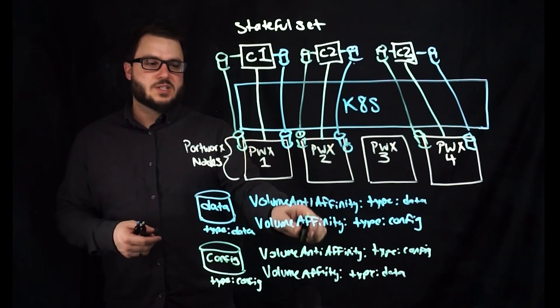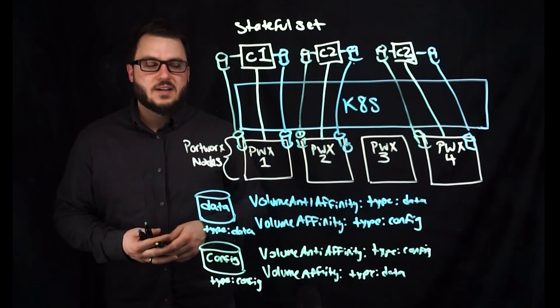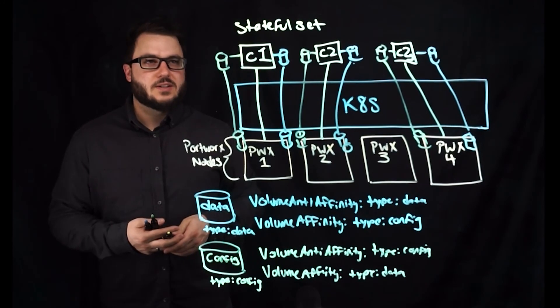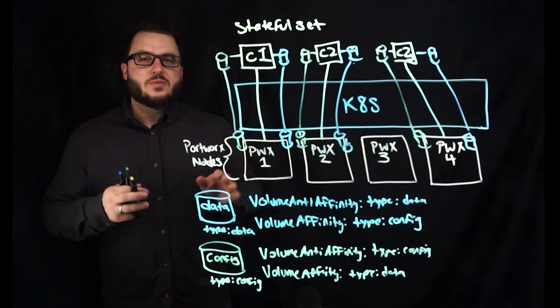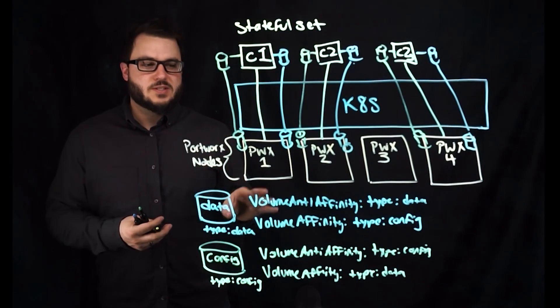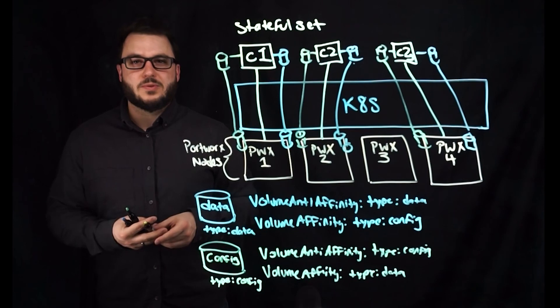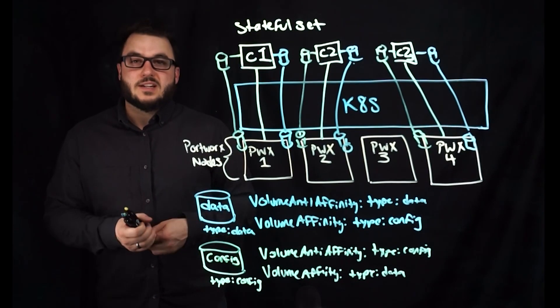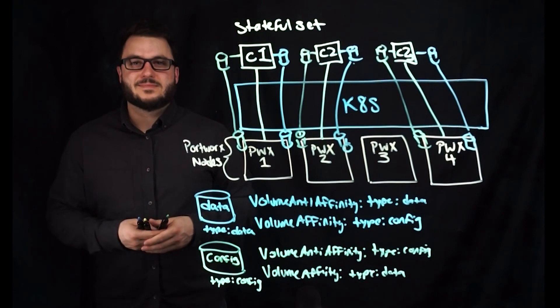And these rules, which can be tied to a storage class, allow you to do that. And we'll provide links to examples that allow you to do that as well. So hopefully this makes sense in terms of how you can configure your volume placement strategies with anti-affinity and affinity rules for placement of your PVCs in Kubernetes. Until next time, take care.